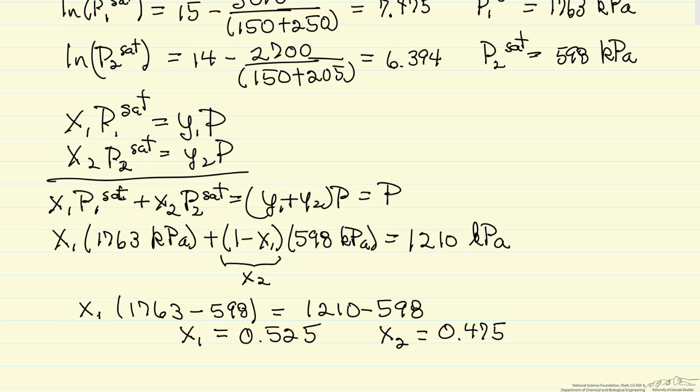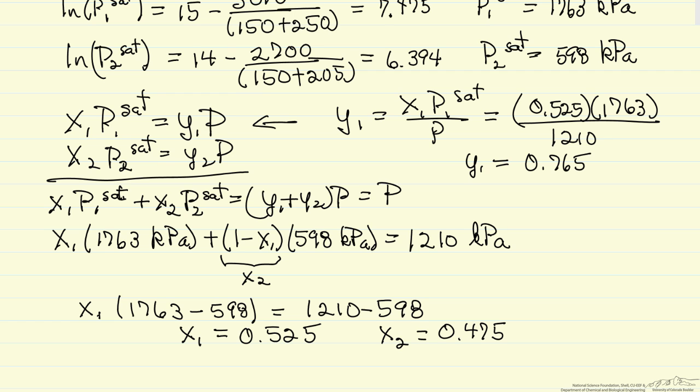You can now go back to Raoult's law and solve for Y1, which is just X1 times P1^sat over the total pressure. We just calculated X1, we calculated P1^sat already - 1763 - and the total pressure in the same units, so that Y1 is equal to 0.765. And of course then Y2, so the Y's add up to 1, is 0.235. So we're almost finished.